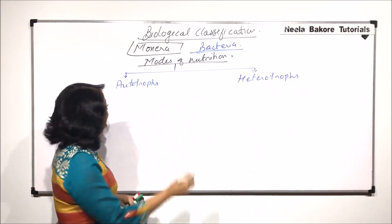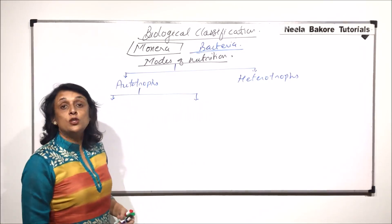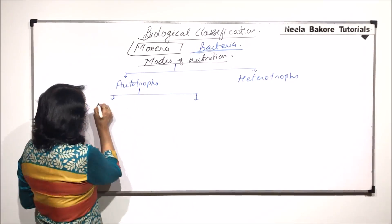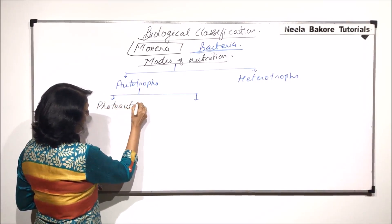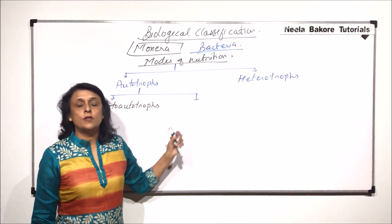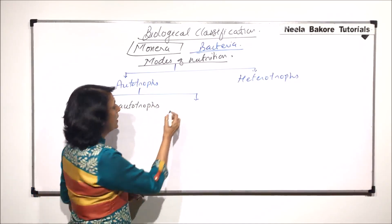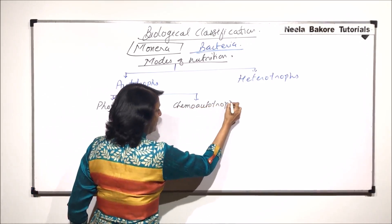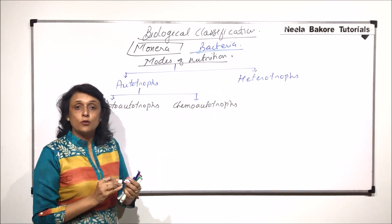The autotrophs can further be divided into two categories. Those which use sunlight as a source of energy are called photoautotrophs. And those which obtain their energy by using some kind of chemical but still synthesize their own food are known as chemoautotrophs. Let us talk about these two categories and then we will come to the types of heterotrophs.